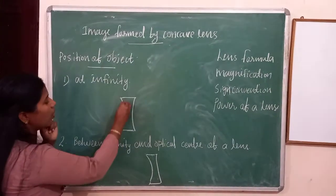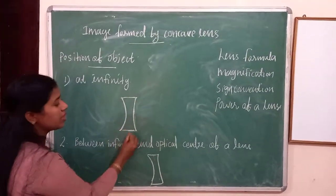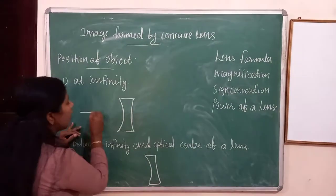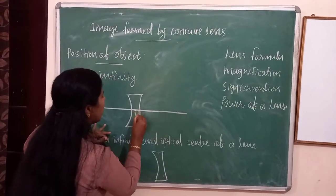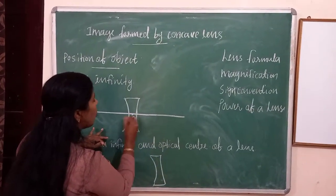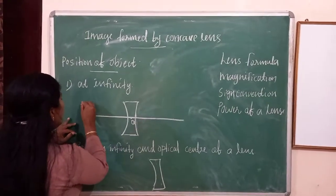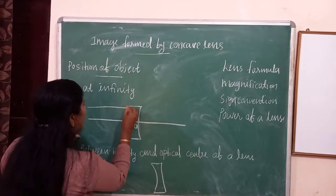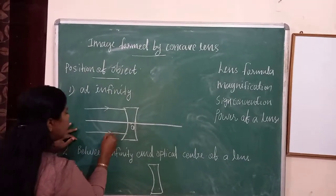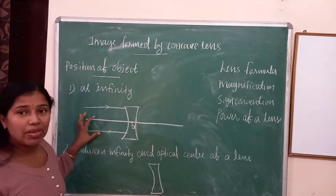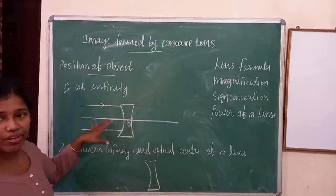First we have to draw the diagram. First we draw the concave lens, then a line through the center which is the optical axis. This is the center point, that is the optical center. A ray of light parallel to the principal axis — light is coming from infinity, object is coming from infinity.